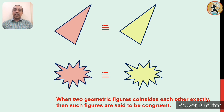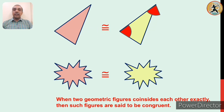Let us consider an angle of the first triangle. If we move this angle to the corresponding angle of the second triangle, does it coincide? Yes — the first angle of the first triangle exactly coincides with the first angle of the second triangle. But that same angle does not coincide with the second angle of the second triangle. This means congruency applies to particular corresponding points — this is called the one-to-one correspondence between points. Whenever two triangles are congruent, their corresponding angles and corresponding sides are congruent to each other.